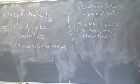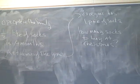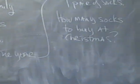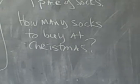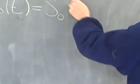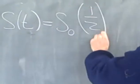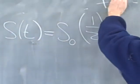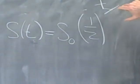Okay, well this is an exponential decay problem. The number of socks that we'll have at any time t will be the number of socks that we buy at Christmas times one half to the t over half-life.